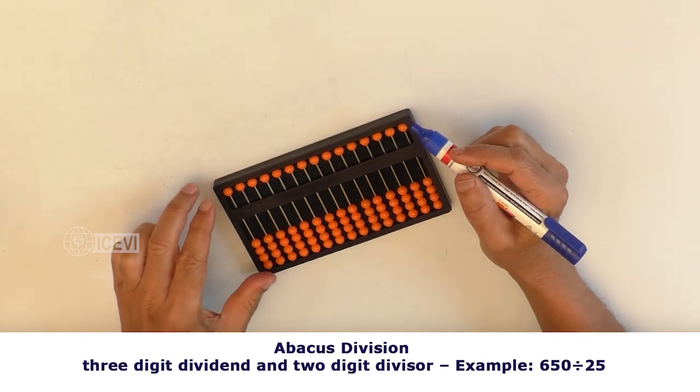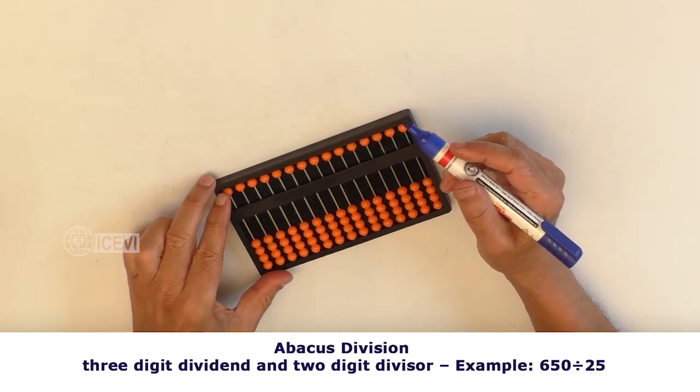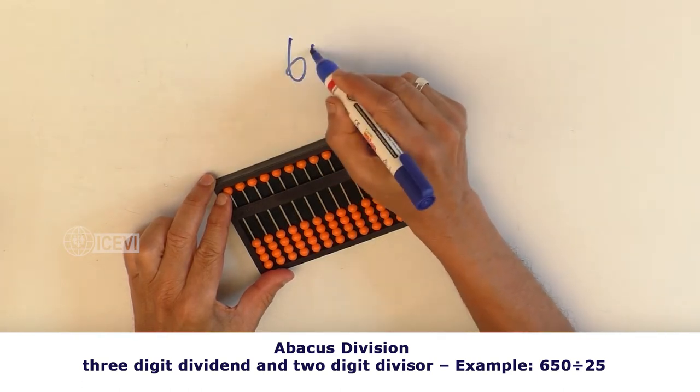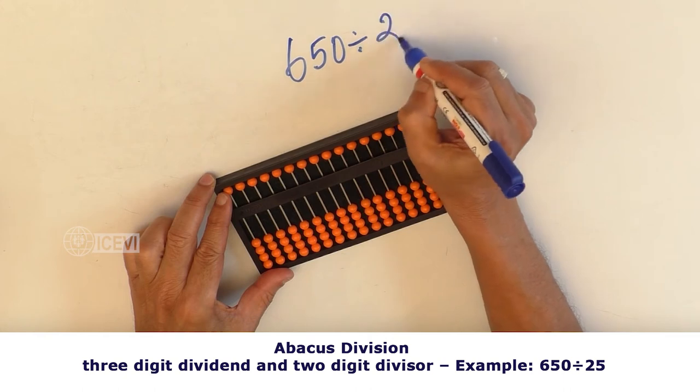Title of the video: Abacus Division, 3-Digit Dividend and 2-Digit Divisor. Example: 650 divided by 25.